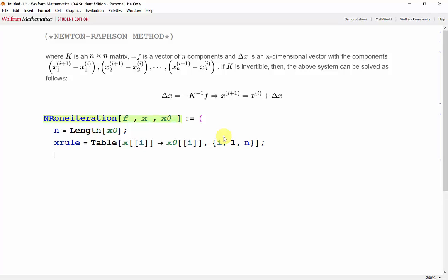Now we need our K matrix, which contains partial derivatives. Because it's a matrix, we'll need both an i and a j increment for the f and x respectively. We'll call this guy kk. We'll need a table function once again. We're taking a derivative of f[i] with respect to x[j], where i goes from 1 to n and j goes from 1 to n.